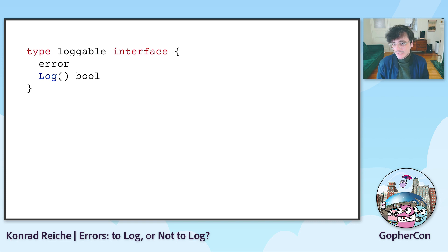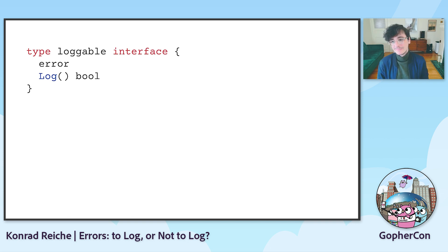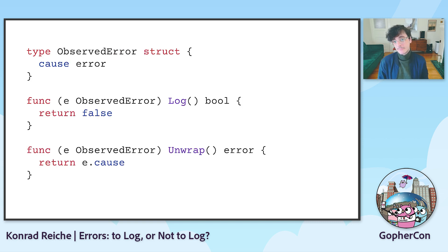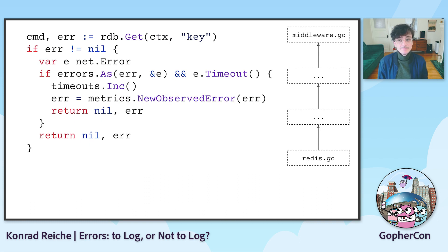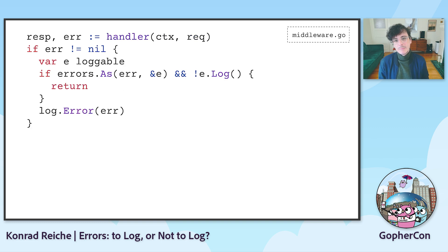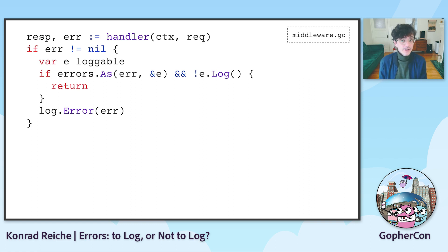Loggable — an interface for errors that lets the error define whether it wants to be logged or not. It's almost like we're giving errors a voice here. For errors we already observed as a metric, we can introduce an observed error type. Observed error implements log to always return false. It allows us to wrap the error and return it with confidence, knowing that our middleware can now assert the error once and check if the error should be logged or not.